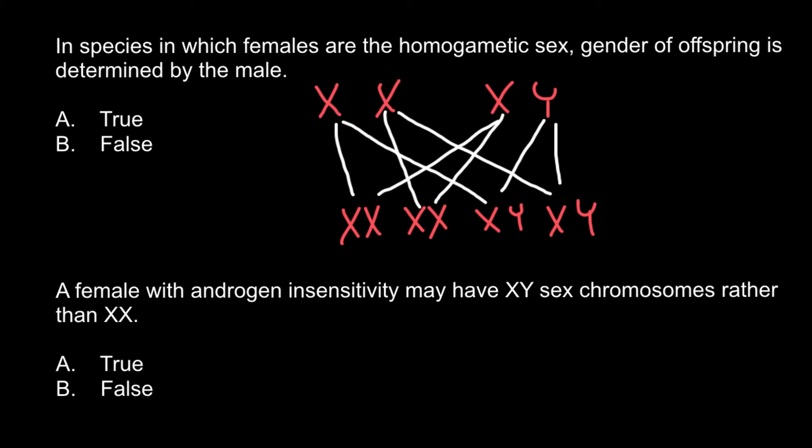As you see, in XY sex determination system, female sperm would be homogametic or would have sex chromosomes that is of the same kind. And males would be heterogametic, so can produce two kinds of gametes.